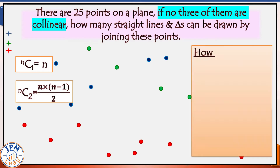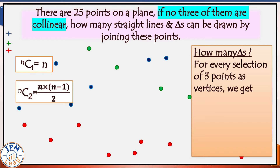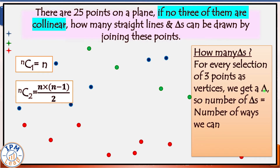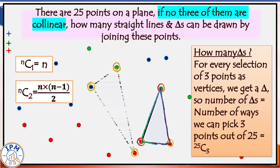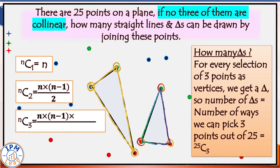Next question: how many triangles? Similar logic works here. For every selection of three points as vertices we get a triangle. It is only when the three points turn out to be collinear that we get a straight line passing through them and not a triangle. Therefore, number of triangles equals the number of ways we can pick three points out of 25, which is 25C3. NC3 is equal to n(n−1)(n−2)/6. So 25C3 is equal to 25 × 24 × 23 / 6, which equals 2300.